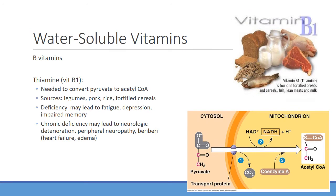Starting with water-soluble vitamins: thiamine or vitamin B1 is very important for helping to convert pyruvate over to acetyl-CoA, acting as a cofactor so you can use oxidative phosphorylation, go through the citric acid cycle, and eventually form ATP in the mitochondria. Without thiamine, you can have problems converting pyruvate to acetyl-CoA. Good sources include legumes, pork, rice, and fortified cereals.